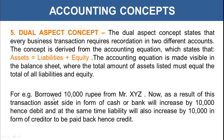For example, if a business borrows 10,000 rupees from Mr. XYZ, the asset side in the form of cash or bank will increase by 10,000 rupees. The business will have a debit of the cash or bank account by 10,000 rupees. At the same time, it must be recorded as a liability — a creditor of 10,000 rupees to be paid back to Mr. XYZ — which becomes the credit account.